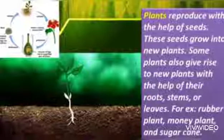Living things reproduce by either laying eggs or giving birth to their young ones. A woman gives birth to a baby, while a pigeon and a hen lay eggs from which chicks come out. Plants reproduce with the help of seeds, and these seeds grow into new plants.